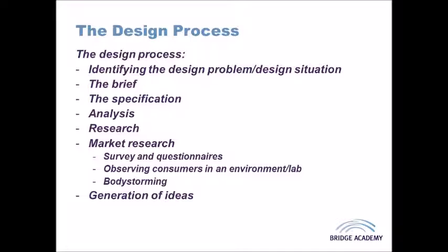Other forms of research include analysing designs similar to yours to find out about materials, how they function, mechanisms, and so on — this is called product analysis. You can also gather information about materials and components through database searches, online sources, or books, and test materials, components, or field-test aspects of the product. You might also develop your design research into anthropometrics to ensure the product is ergonomic and can fit the group of people you're intending to aim it at.